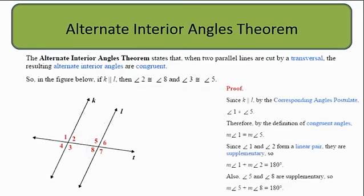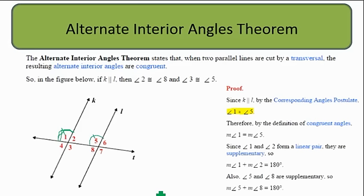Let's walk through a quick proof of why that's true. Since K is parallel, by the corresponding angles postulate, angle 1 is congruent to angle 5 — we can mark them with the same marking. Therefore, by the definition of congruent angles, the measure of angle 1 equals the measure of angle 5, because two angles are congruent when they have the same measure.